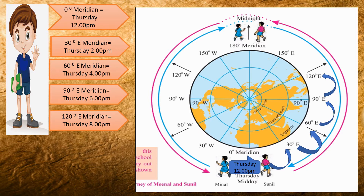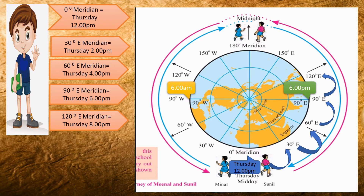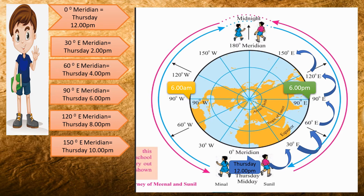You must have noticed that in the Meenal journey, at 90 degree west meridian it was 6 am — 6 o'clock in the morning. But here, at 90 degree east, it is 6 pm — 6 o'clock in the evening. These are opposite longitudes. Again, Sunil is moving from 120 degree east to 150 degree east meridian — another 2 hours difference. Counting from 8: 9, 10 — so at 150 degree east it will be Thursday 10 pm.